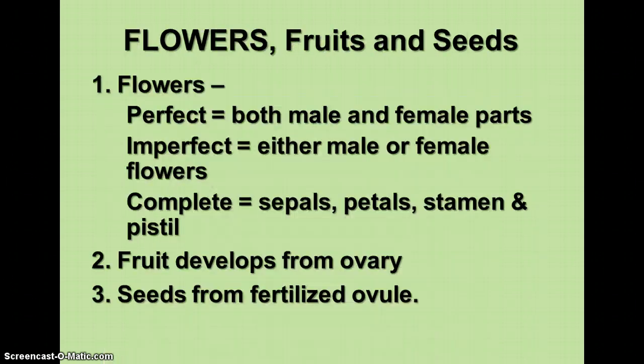Flowers can be perfect, imperfect, or complete, depending on what parts they have. Perfect flowers have both male and female parts — both stamens and pistils. Imperfect flowers have either male or female parts. A complete flower has all parts: sepals, petals, stamens, and pistils; an incomplete flower is missing one or more of those. A complete flower will always be perfect, but a perfect flower does not have to be complete.